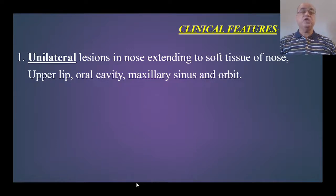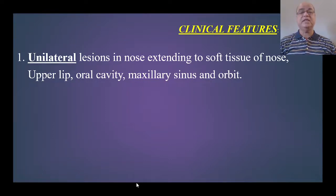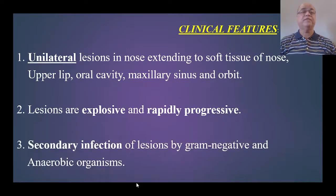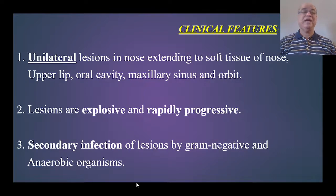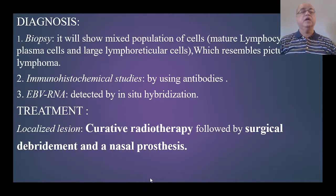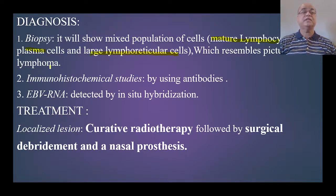Clinically there will be unilateral lesions in the nose which may extend to the soft tissues of the nose, upper lip, oral cavity, maxillary sinus, and the orbit — so it is a localized disease. Lesions are explosive and rapidly progressive, with secondary infection of the lesions by gram-negative and anaerobic organisms. Biopsy will show a mixed population of cells including mature lymphocytes, plasma cells, and large lymphoreticular cells, which resembles the picture of lymphoma — that is why it is called T cell lymphoma.